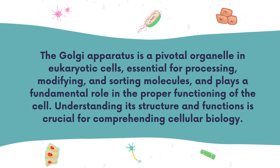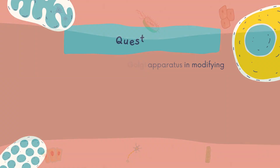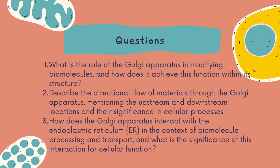Understanding its structure and functions is crucial for comprehending cellular biology. Here are some research questions. Number one: what is the role of the Golgi apparatus in modifying biomolecules, and how does it achieve this function within its structure? Number two: describe the directional flow of materials through the Golgi apparatus, mentioning the upstream and downstream locations and their significance in cellular processes.